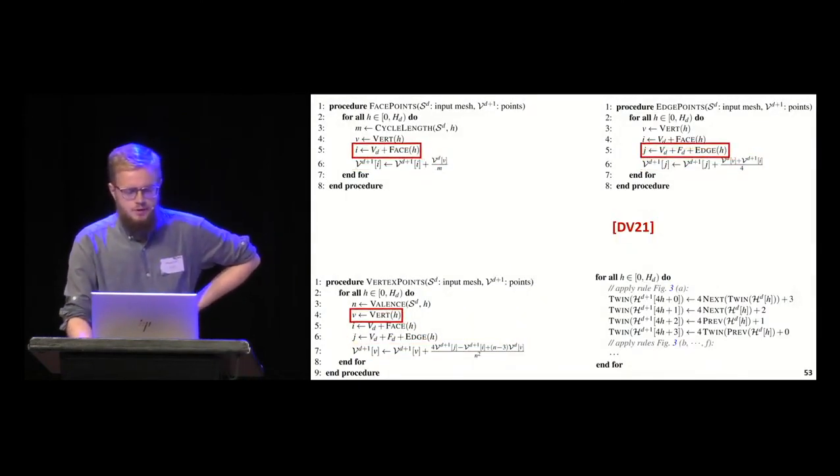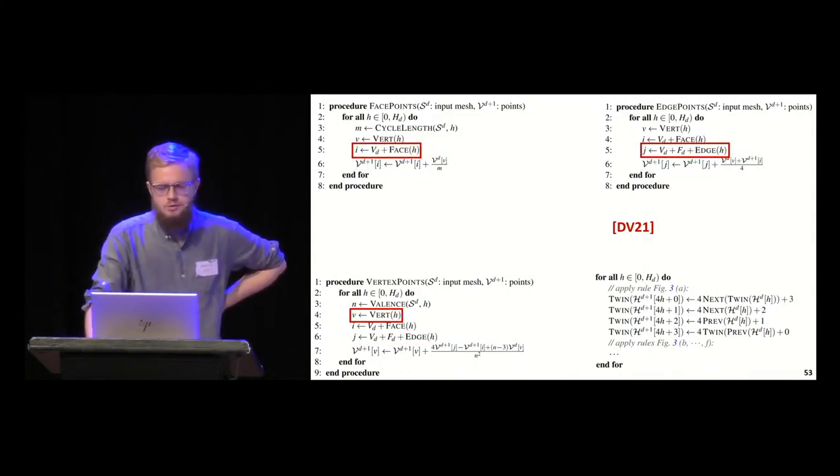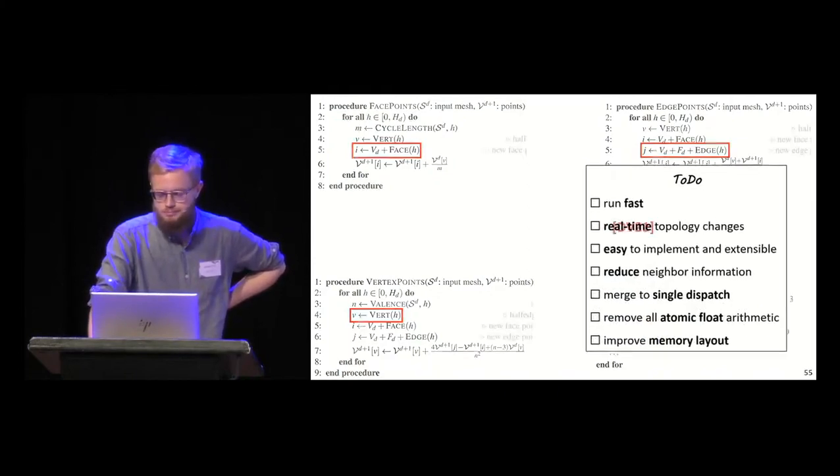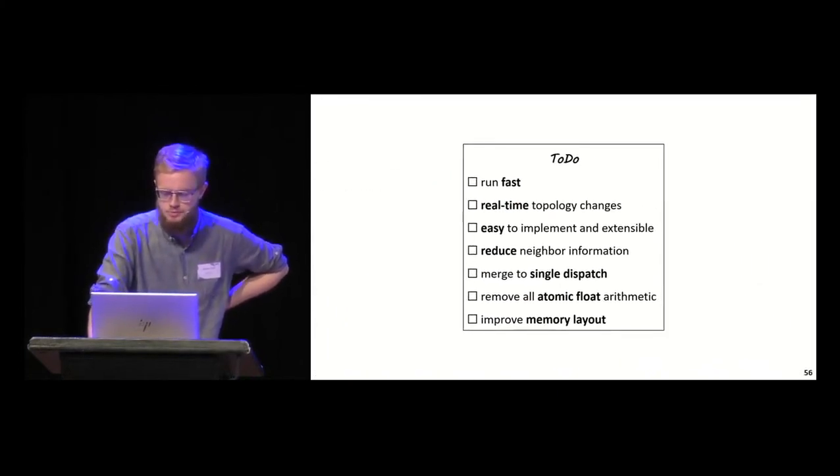Finally, we noticed some problems with the memory layout. More on that later, so let's add this to our to-do list: we want to improve it. This concludes the to-do list. Let's start with the first item: we want to reduce the neighborhood information.